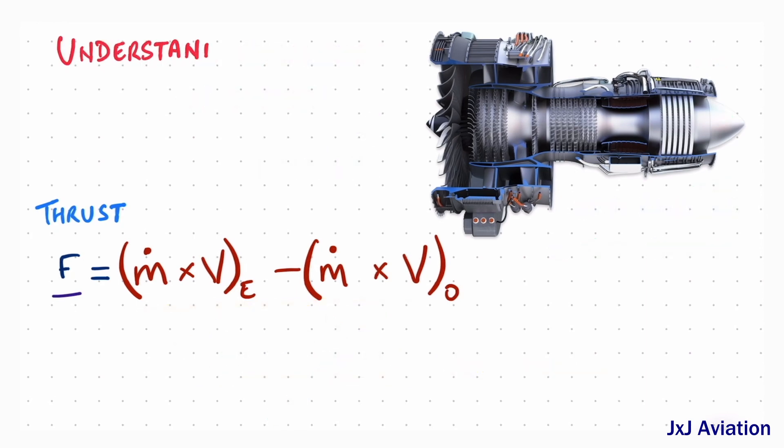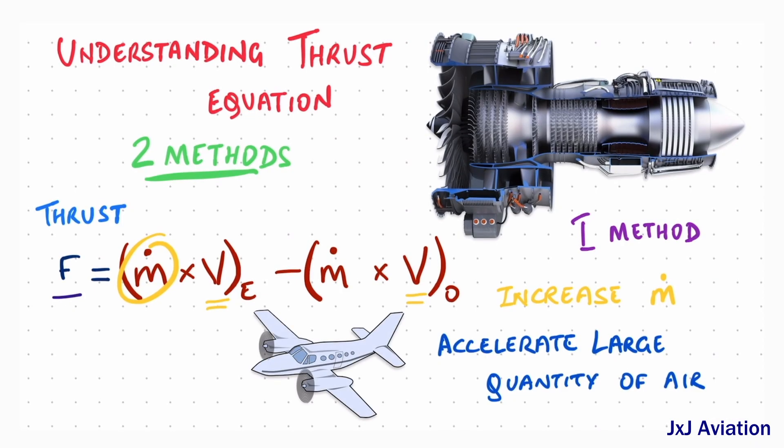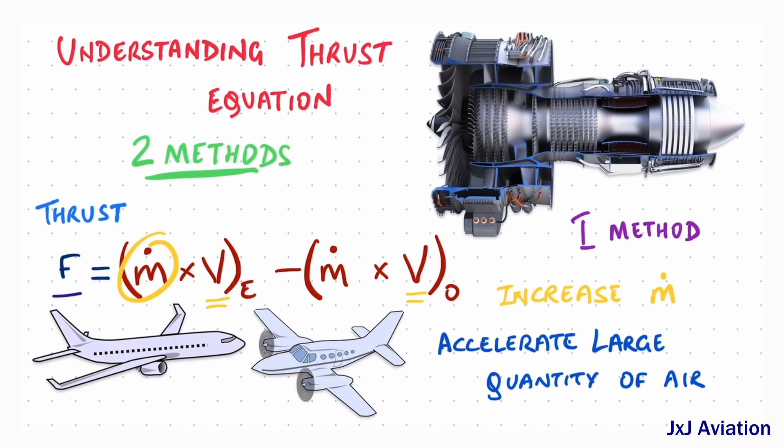Understanding the thrust equation. According to the thrust equation, there are two methods of increasing the thrust of an engine. The first method is to increase the mass flow rate. The mass flow rate can be increased by accelerating a large quantity of air such that the exit air velocity is more than the entrance air velocity. This concept is applicable in propeller engines and high bypass turbofan engines.